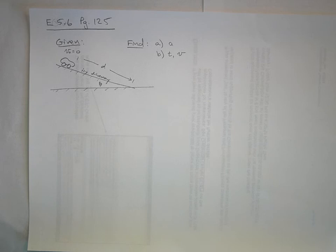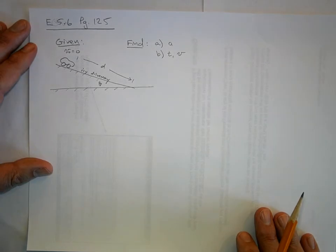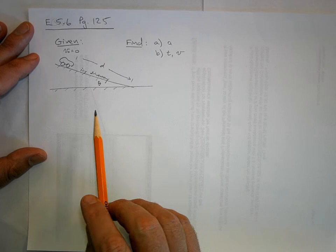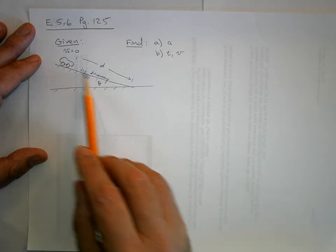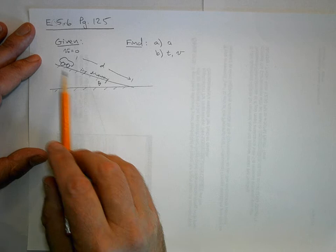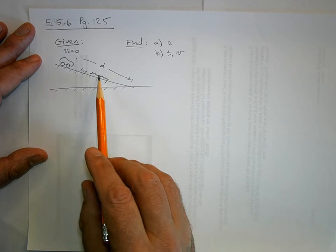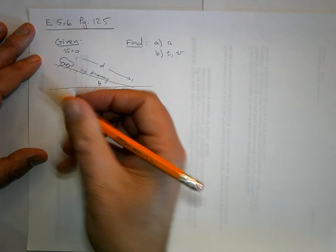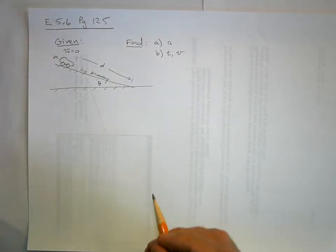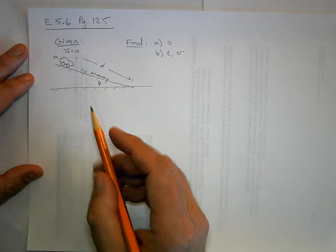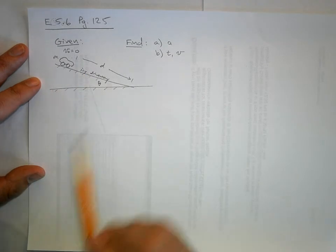So I've drawn what's given here. We've got a car on an icy road—there's no friction on this road at all—it's inclined at theta, and it has a mass of m. Although the mass isn't really going to matter here, and we're a distance d from the end of the driveway.